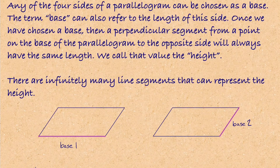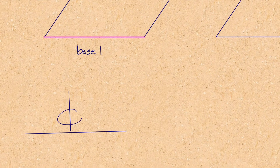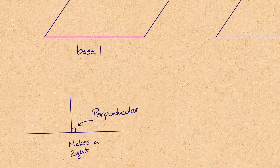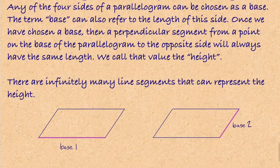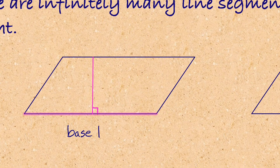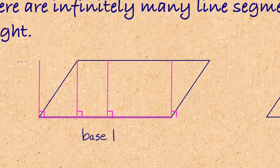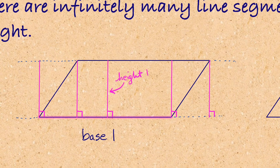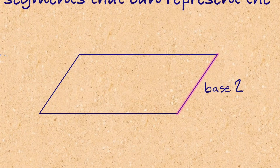Once we've chosen a base, we need a perpendicular segment from a point on the base to the opposite side — and that value is the height. Perpendicular means 90 degrees, making a right angle. So this line here is perpendicular — notice the right angle, 90 degrees from the base to the opposite side. And notice how the height doesn't change no matter where you move it, even if we extend the lines of the parallelogram. That's our height: 90 degrees from the base.